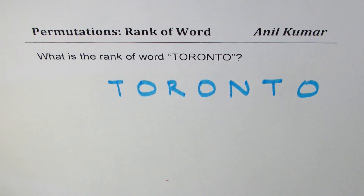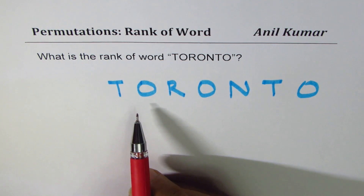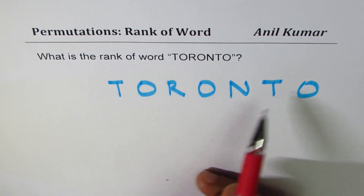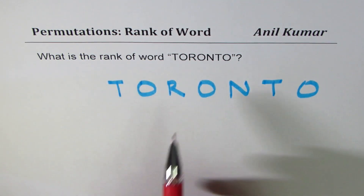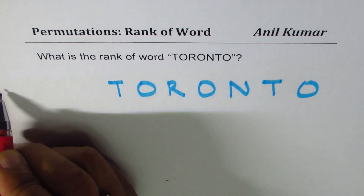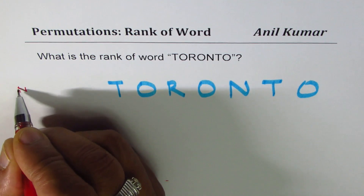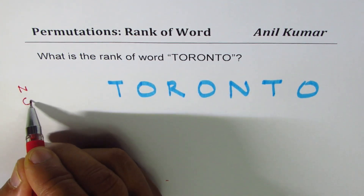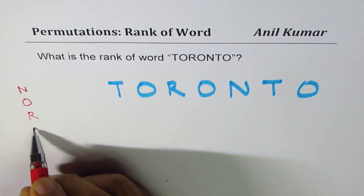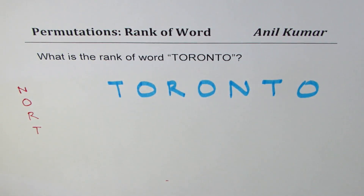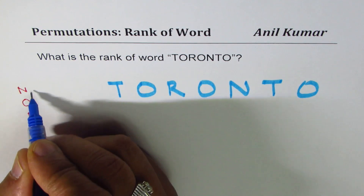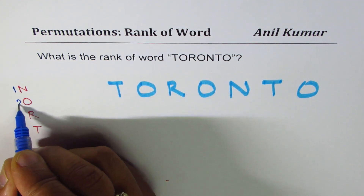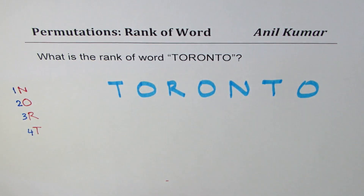To find the rank of such a word, we'll use the shortcut method. The first step is to arrange these letters in alphabetical order. Looking at the alphabet, N comes first, then O, P, Q, R, S, T — so Toronto has only four distinct letters. Arranging them in order: N comes first, so we give 1 to N, 2 to O, 3 to R, and 4 to T.